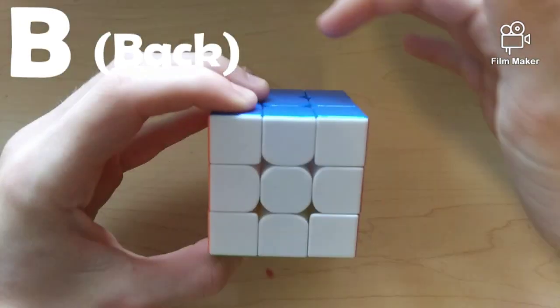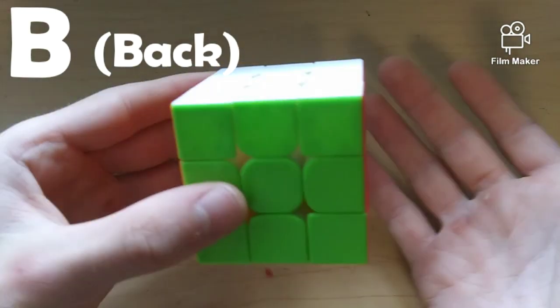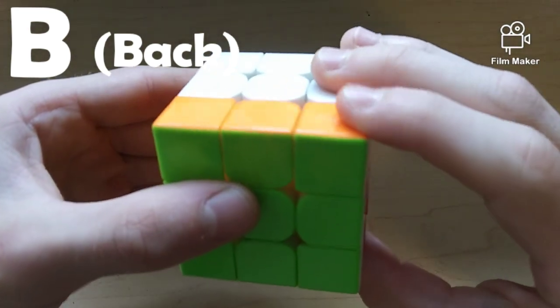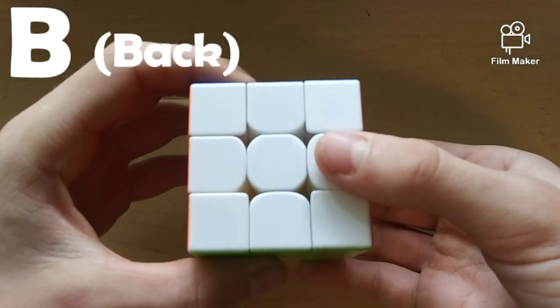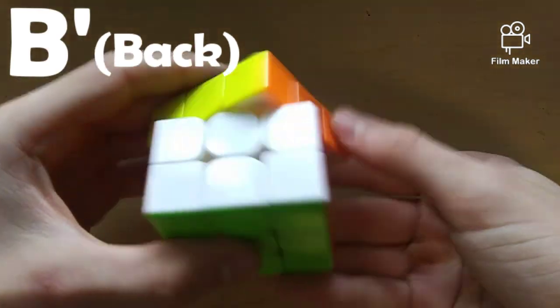And finally, we have B, which is the back side of the cube. And I know sometimes B is difficult to know which way to turn it. So, you will start off with F, which goes this way. And B, since it's the opposite side, will just be the opposite direction. So, this is B, and this is B'.